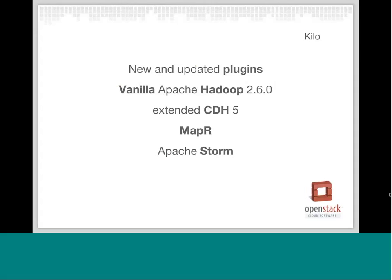During Kilo, a few new plugins were introduced and new versions were supported for existing clusters. The newcomers to the Sahara plugins repository are the MapR plugin — a Hadoop distribution with a custom, very high-performance distributed file system — and Apache Storm, a real-time data analysis tool. The two existing plugins, Vanilla Hadoop and Cloudera Distribution including Hadoop, were updated to the latest versions, and some additional services were supported by the Cloudera plugin as well.